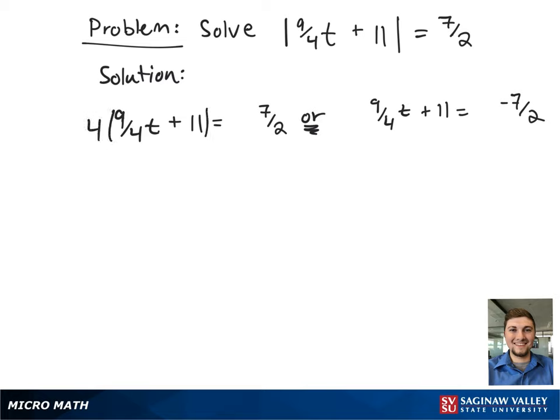So starting on the left hand side of the equation, because our least common denominator is 4, we're going to multiply out both sides by 4 to clear the fractions. This gives 9t plus 44 equals 14.